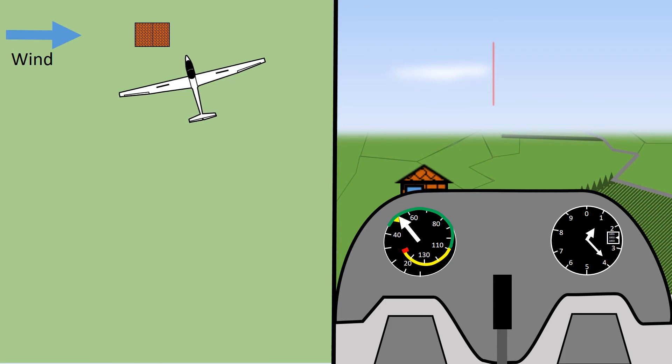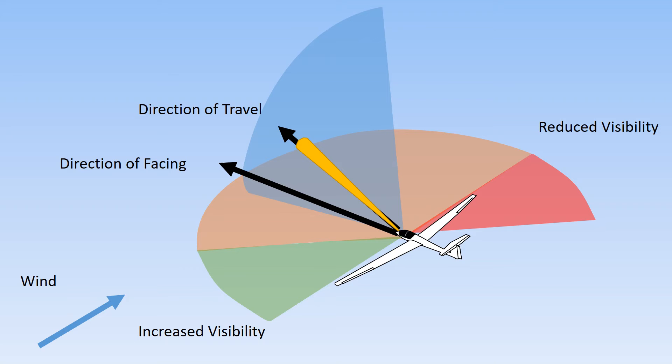Judging the correct amount to point into the wind takes a little practice. Even experienced pilots will have to modify their heading to ensure that they are flying straight. Notice that the focus of the lookout should be in the direction of travel, not in the direction the glider is facing.